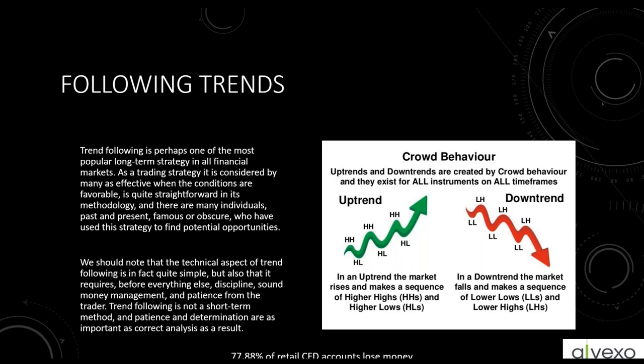In our market, we define trends as higher highs and higher lows when a price is moving up. It should be making a higher high and then a higher low — higher high, higher low. Moving down is just the exact opposite: the peaks and valleys in price movement reverse.